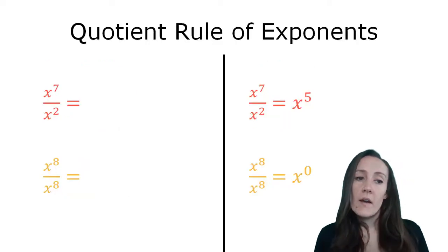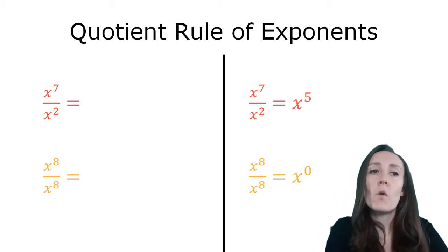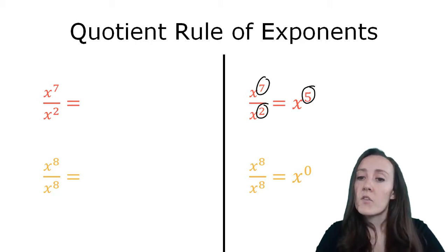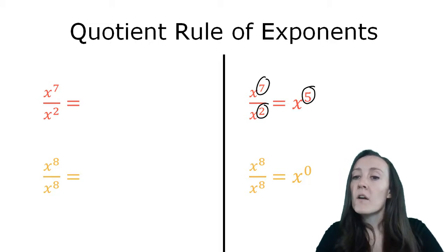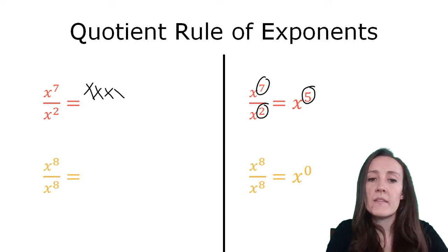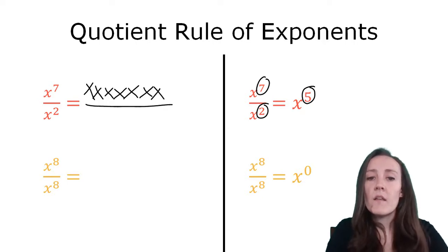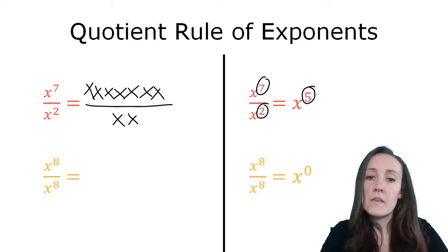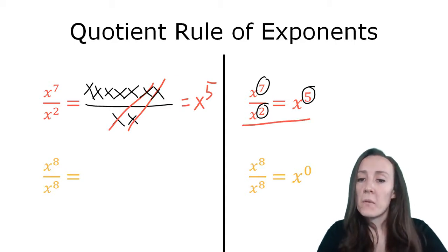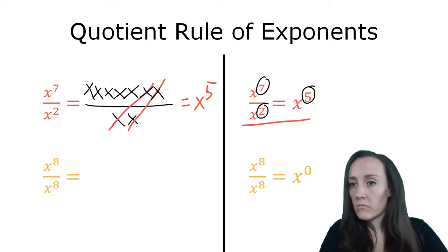Another reason that any number raised to the zero power equals 1 is because of the quotient rule of exponents. The quotient rule of exponents says that if you have two powers with the same base divided by each other, you can subtract the exponents to simplify it. So for example, if I had x to the seventh over x squared, I could do 7 minus 2 and get x to the fifth. The reason this works is because x to the seventh means I'm multiplying x by itself seven times and then dividing it by x times itself twice. When you have a number divided by itself you can cancel it out, because any number divided by itself just equals one. So two of the x's get cancelled out leaving me with five x's, which is x to the fifth. The quotient rule is just a shortcut to help you do that without expanding everything out.